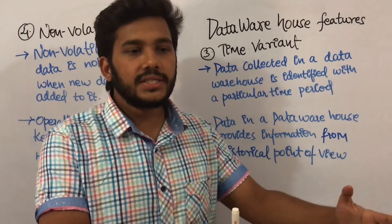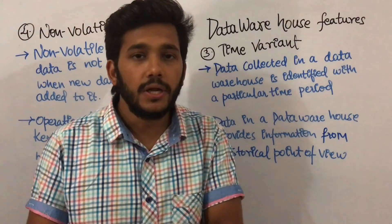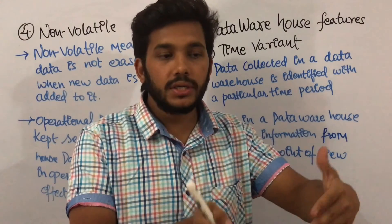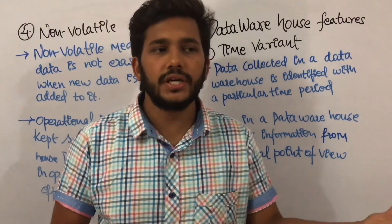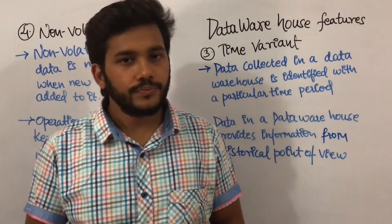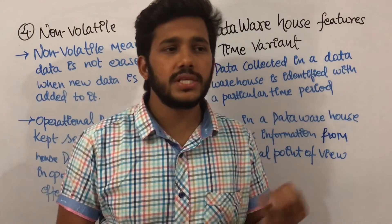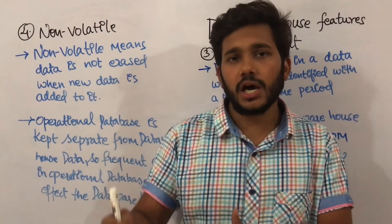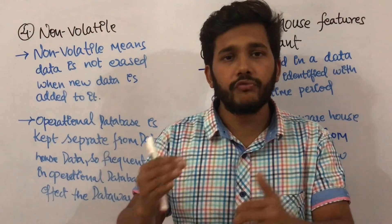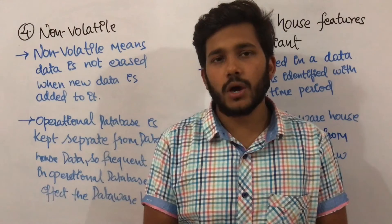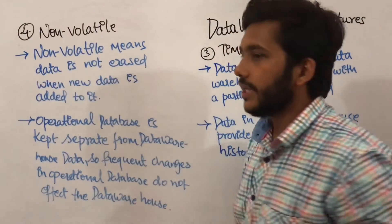Data can also be collected based on different time variants, such as particular seasons — summer, winter, or rainy seasons — to extract the information needed. Data in the data warehouse is time variant, meaning data for different periods can be collected, whether for a five-year period, a particular week, or a particular year.